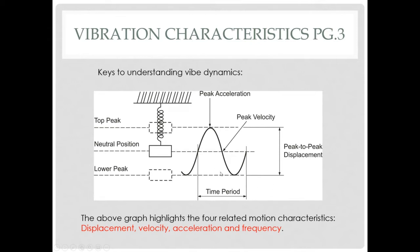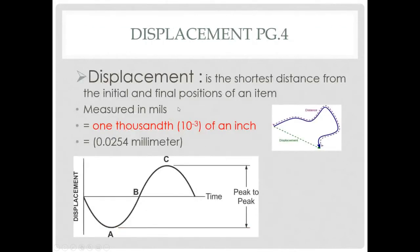These are called vector quantities because they measure certain changing measurements. When we measure vibration, we're talking about the interrelationship of all these different characteristics. The first characteristic is displacement. By definition, it is the shortest distance from the initial and final positions of an item. It is measured in mils — a mil is equal to a thousandth of an inch or 0.0254 millimeters. When we measure displacement, we're measuring the total amount that the object moves away from and towards the detector.